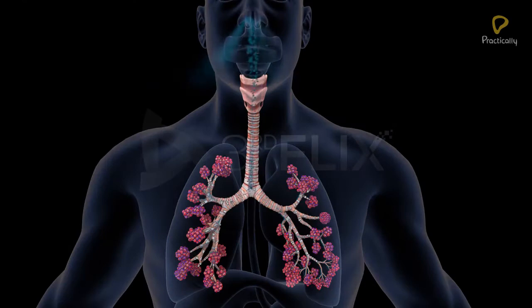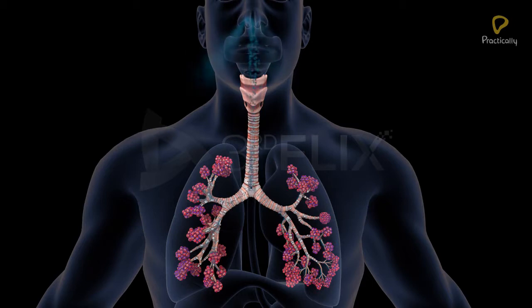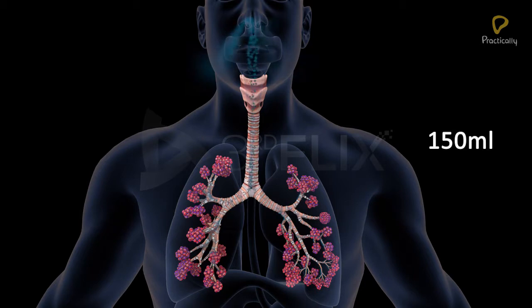The volume of air present in the bronchial tree is referred to as the dead space volume, as it does not take part in gaseous exchange. It is 150 millilitres.